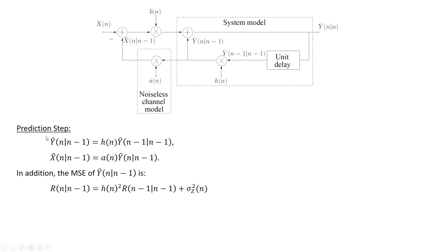Both of these one-step predictions can be shown to be the LMMC estimates of Y and X respectively, given the observations of X up to time n-1, by verifying that the orthogonality principle holds. In addition to the estimates, we can also compute the mean squared error of the one-step prediction of Y recursively: the one-step prediction MSE is obtained from the MSE of the estimate of Y at time n-1, multiplied by the coefficient H squared, plus the variance of the driving noise process. This prediction MSE is needed to set the Kalman gain in the update step.